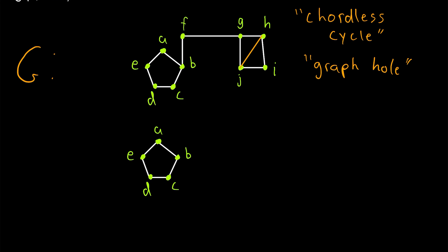Notice that this is a cycle graph. Then compare that to what we get when we look at the subgraph of G induced by the vertex set of this cycle, which has a chord.